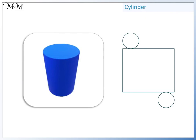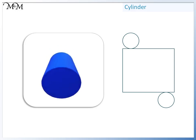Here we have a cylinder. The flat 2D shapes that can be found on a cylinder are circles. These are here and here.